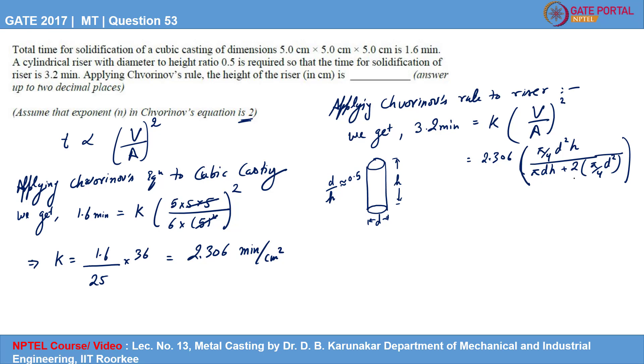Now upon further simplification, we can simply write H in terms of diameter, because we are interested in finding the height of the cylindrical riser. So we will write diameter in terms of height. So H can be nothing but 2 times D.